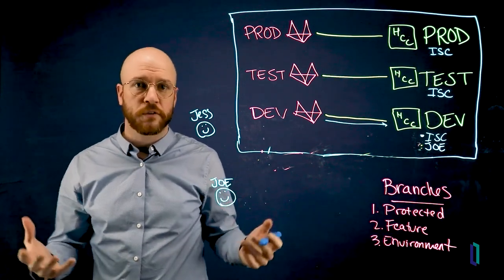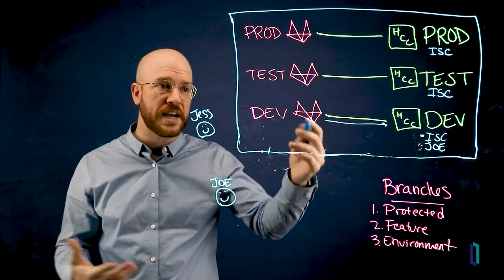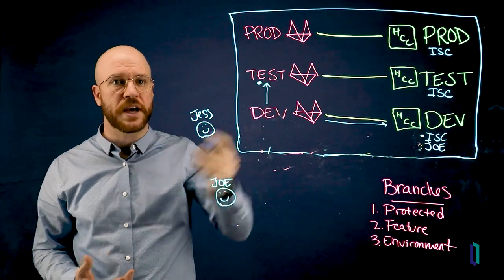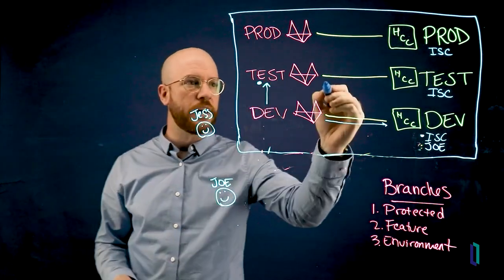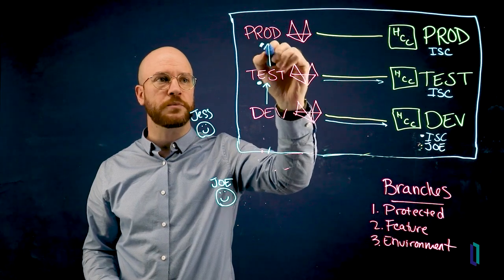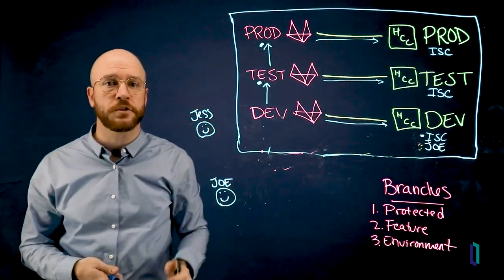When Jess or whoever at this organization is responsible for moving certain commits or the entire thing up from dev to test, they create a merge request to merge dev into test. Same scenario happens there. And then likewise, to make the merge request from test to production, eventually your changes get rolled all the way up into production.